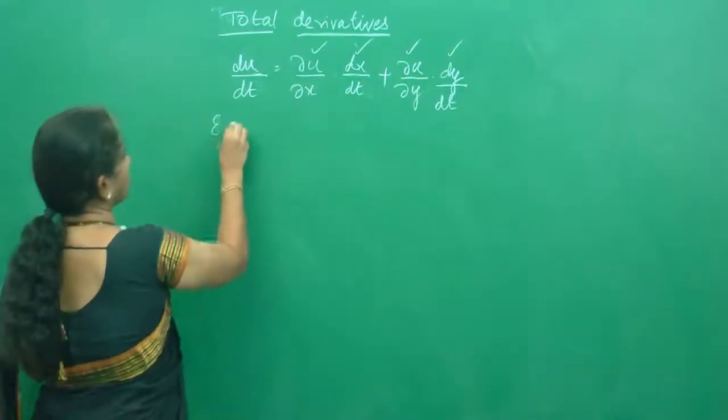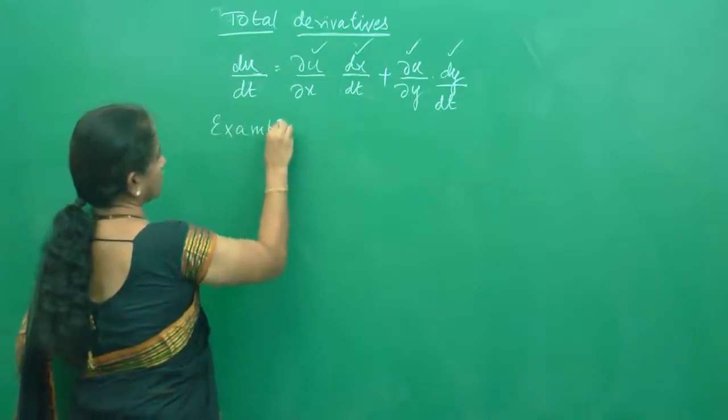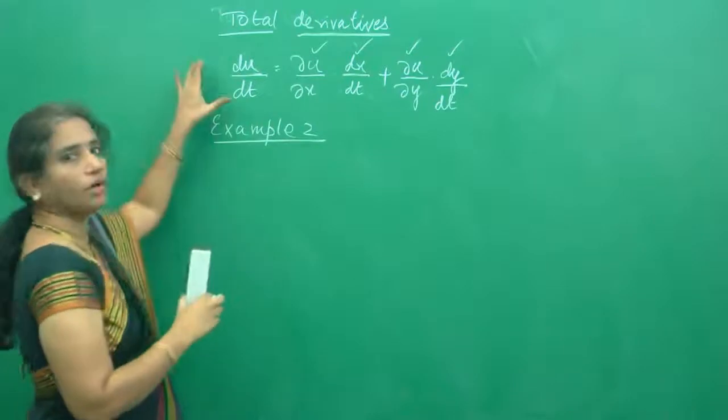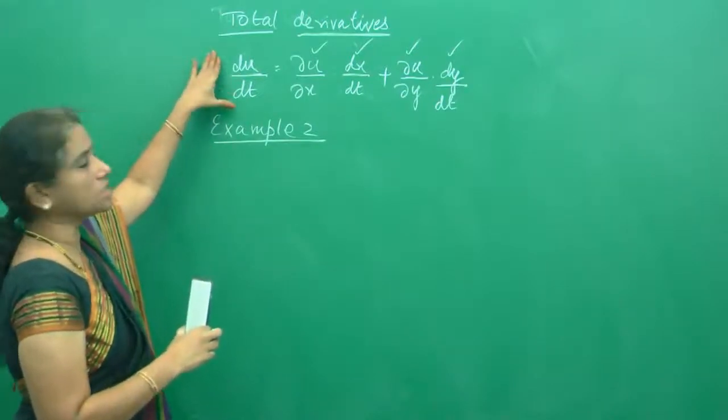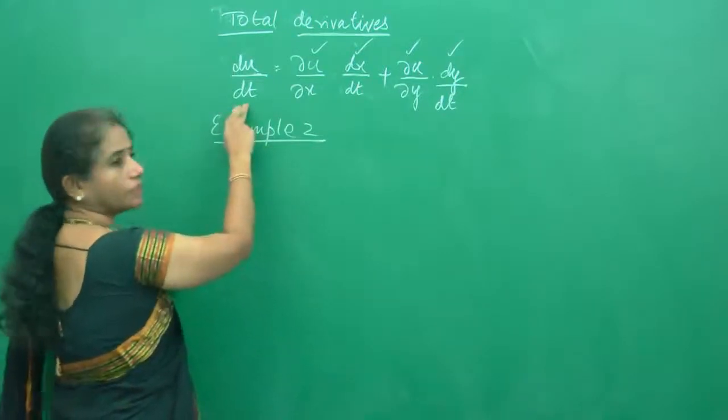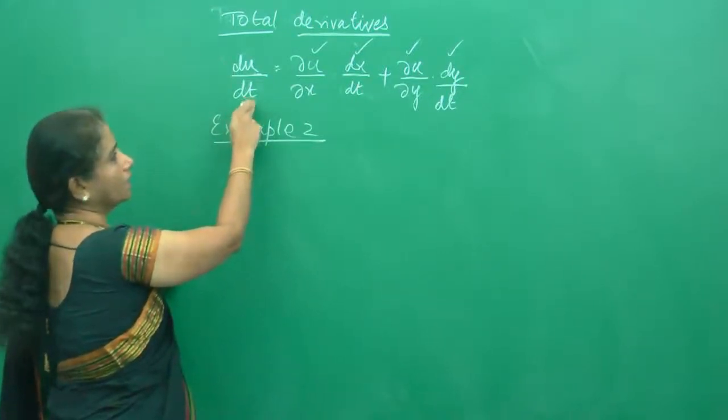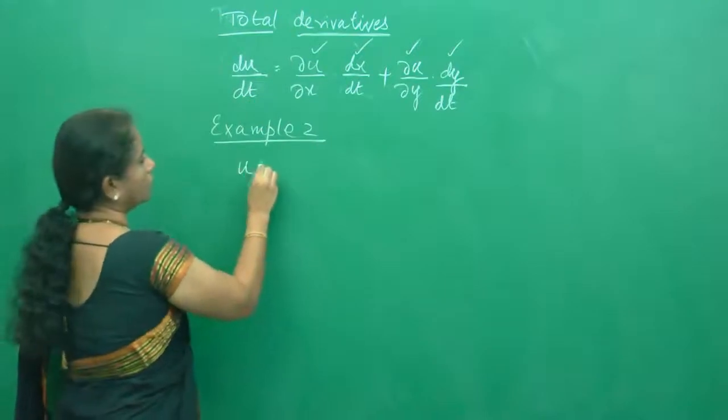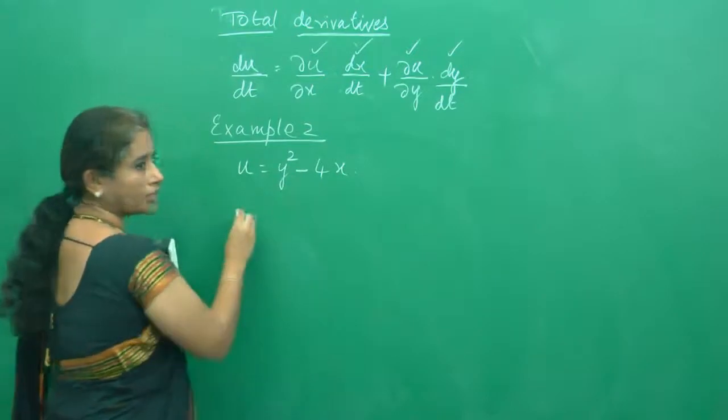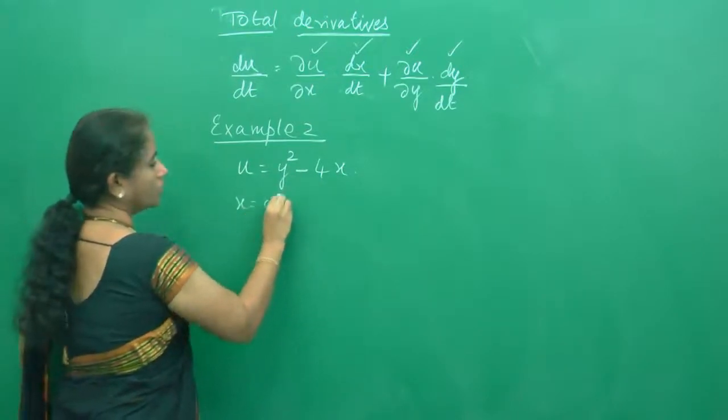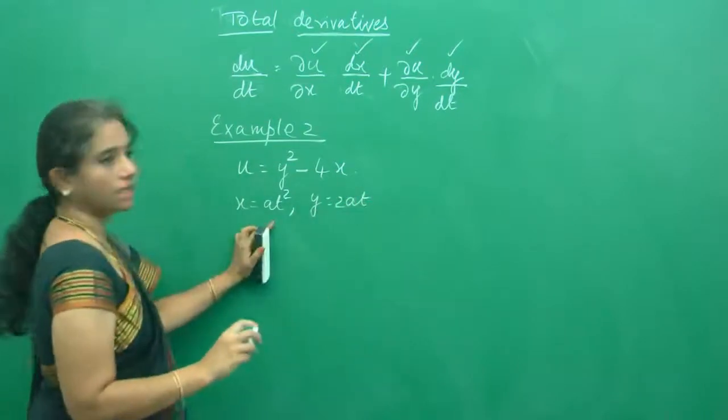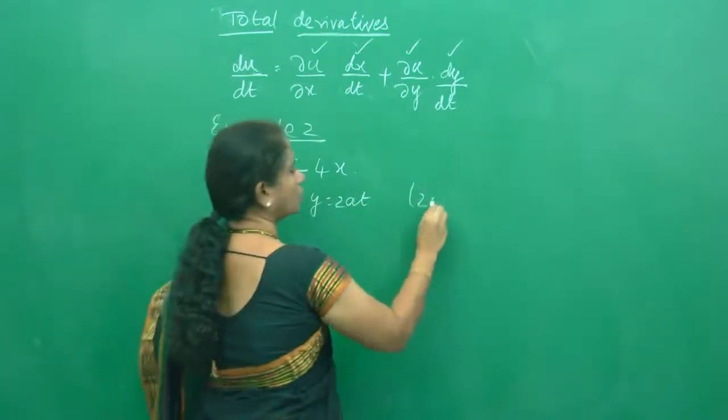We are going to solve one more example from the anniversary paper using the formula of the total derivative. You are asked to find the value of du by dt. You are given u equals y square minus 4x, x equals 8t square, and y equals 2at. This has appeared in Anna University paper 2011.